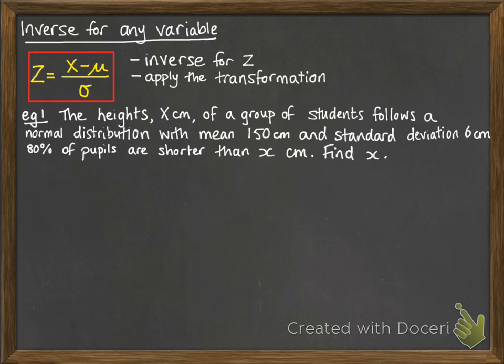Easiest to show you with an example. We've got the heights measured in x centimeters of a group of students. They follow a normal distribution with mean of 150, standard deviation 6. 80% of the pupils are shorter than x centimeters, so find x.